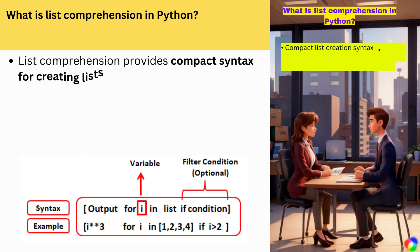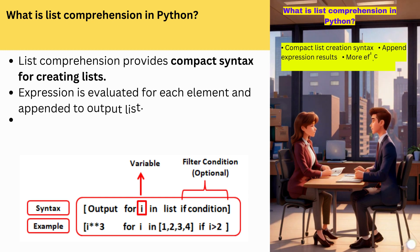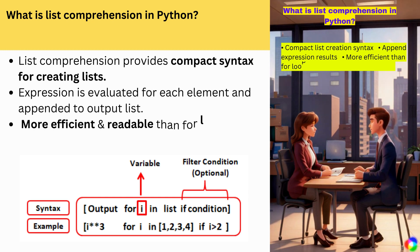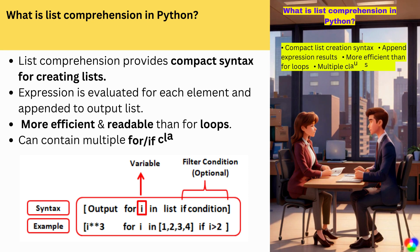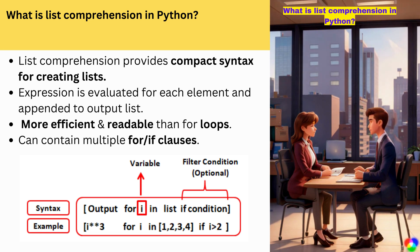What is list comprehension in Python? List comprehension provides compact syntax for creating lists. An expression is evaluated for each element and appended to the output list. More efficient and readable than for loops. Can contain multiple for/if clauses.